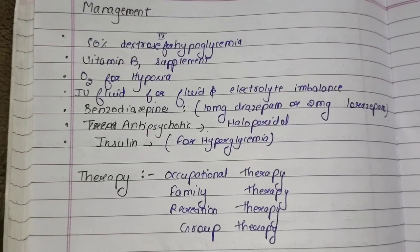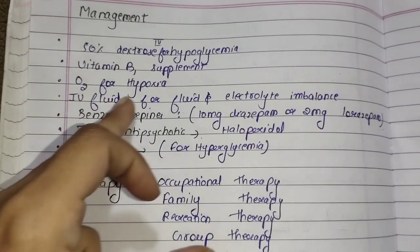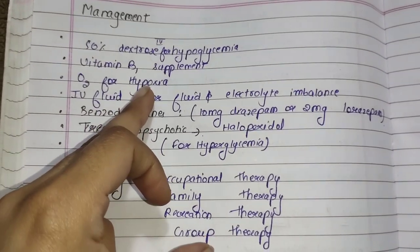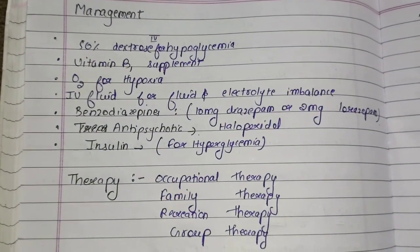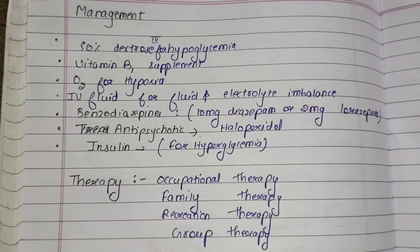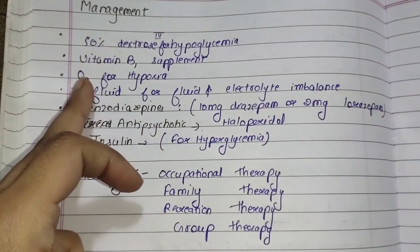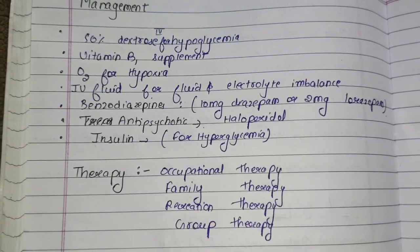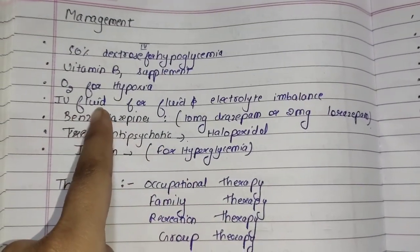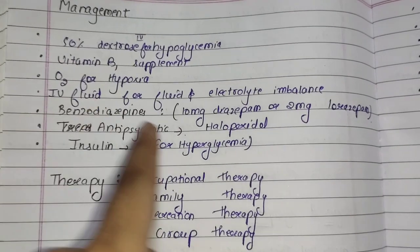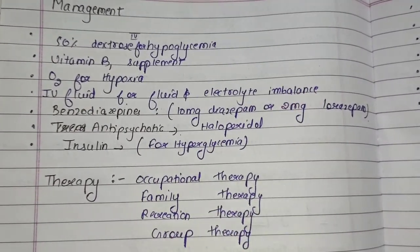Next, vitamin B supplements can be given to the person to treat vitamin B deficiency, which helps in treating dementia as well. In the condition of hypoxia, when the amount of oxygen in the person's body is decreasing, oxygen therapy can be provided. Next, IV fluids can be given to the person to treat fluid and electrolyte imbalance caused by delirium.